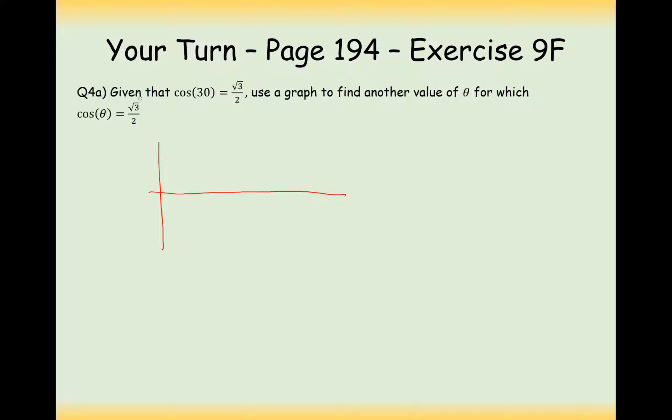So first of all, if cos of 30 is root 3 over 2, use our graph to find another value of theta for which cos of theta equals root 3 over 2.